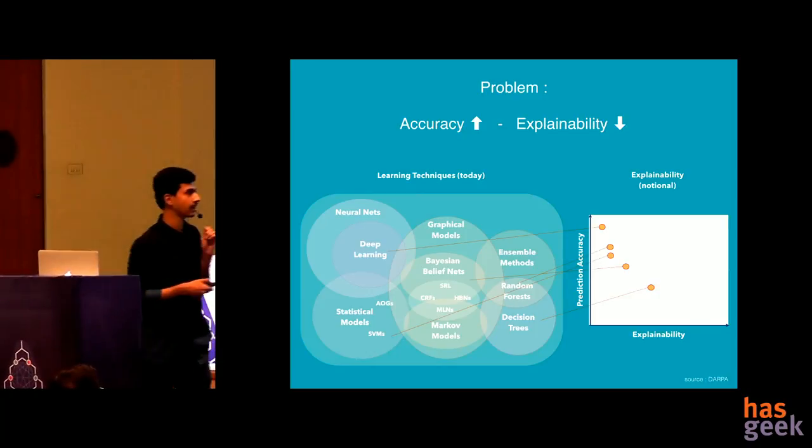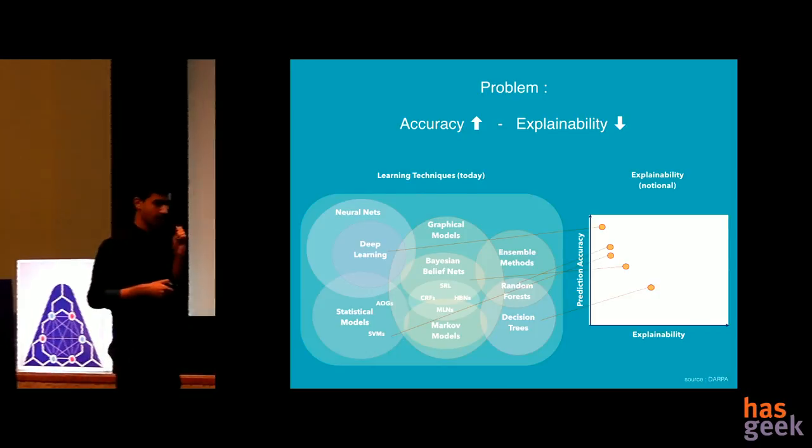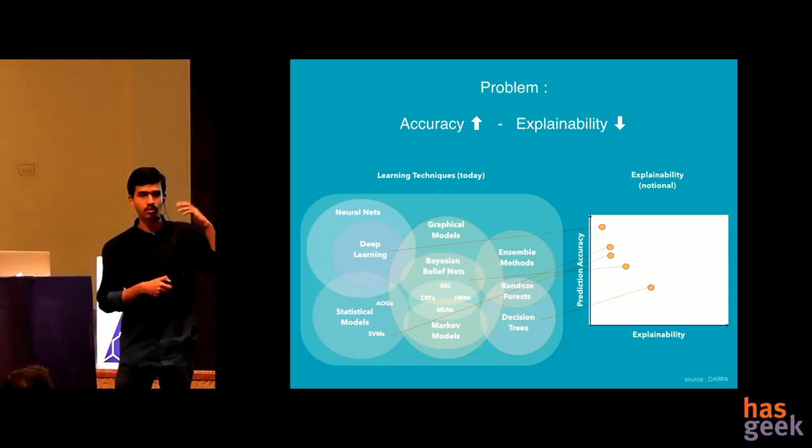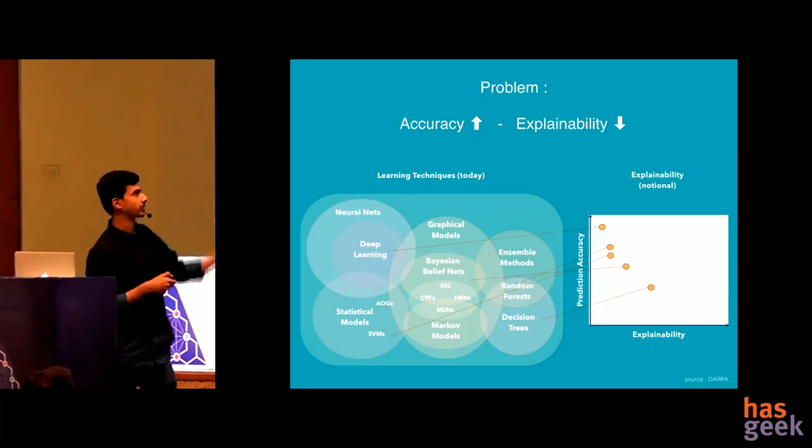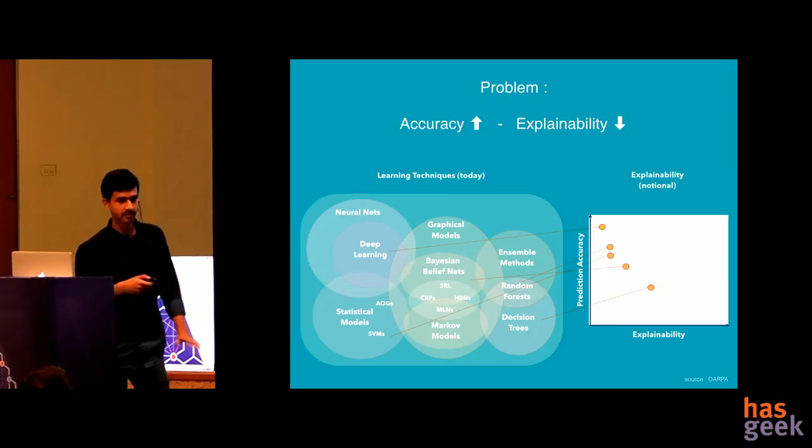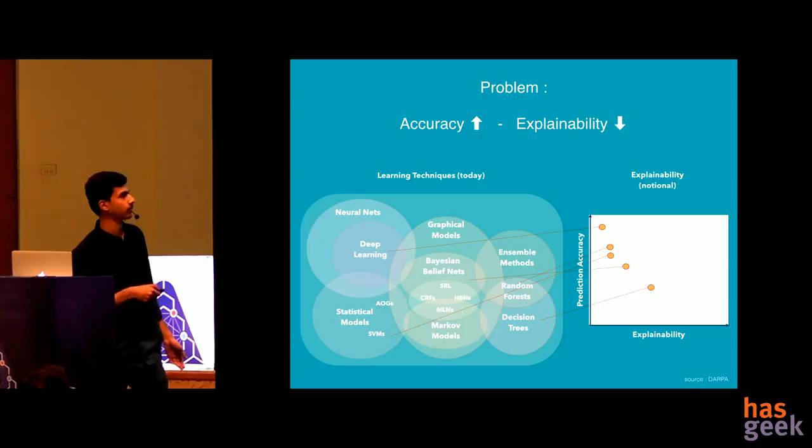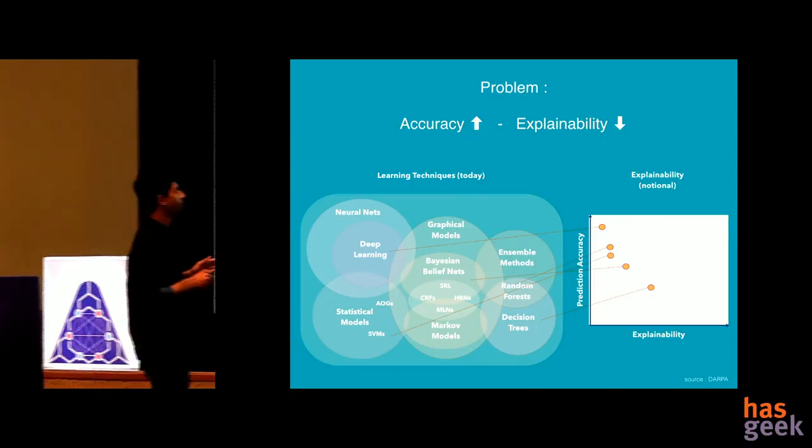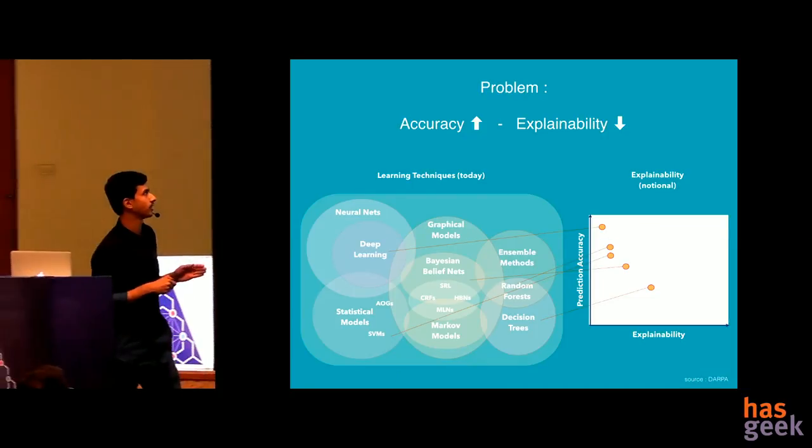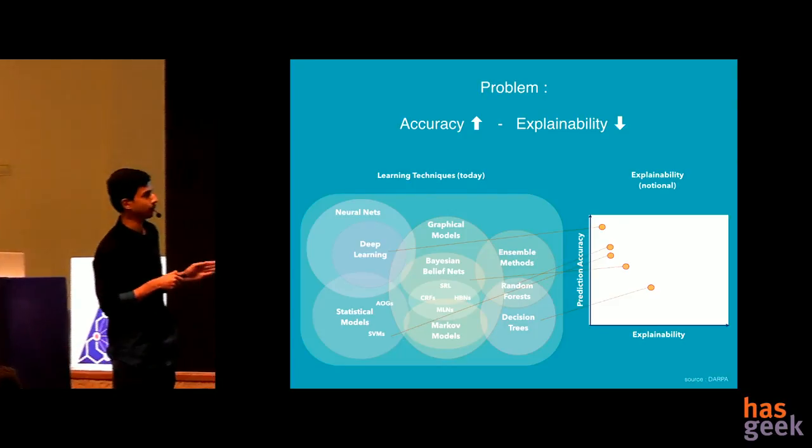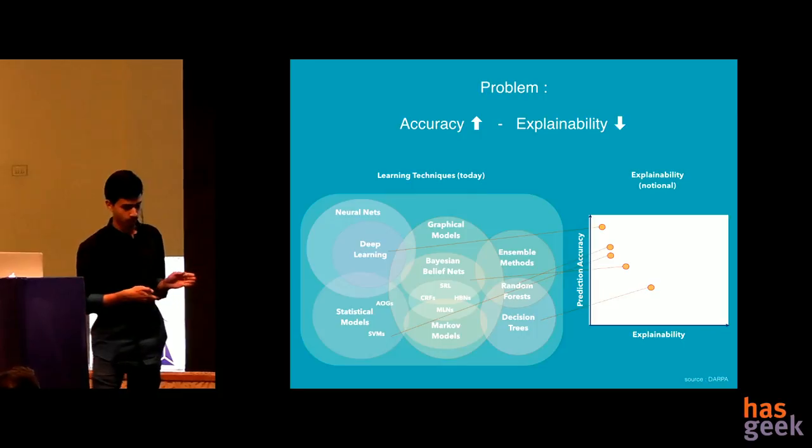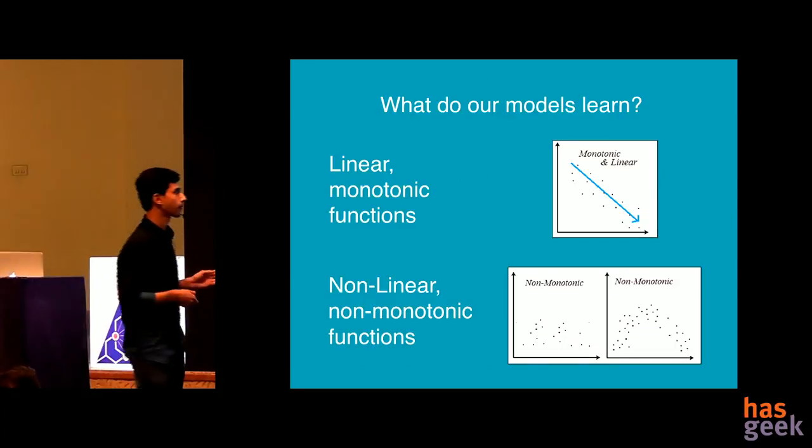The problem that occurs is that as we have higher and higher accuracies with more complex models, explainability of the model gets hit by a large extent. You see here, decision trees are very explainable. You can see at each node what is happening. But as you go up to graphical models, Markov models, and deep learning, you get a very high bump in accuracy but very low explanation capability.